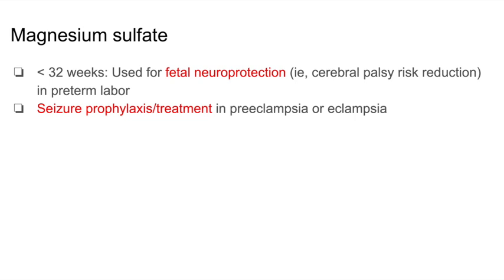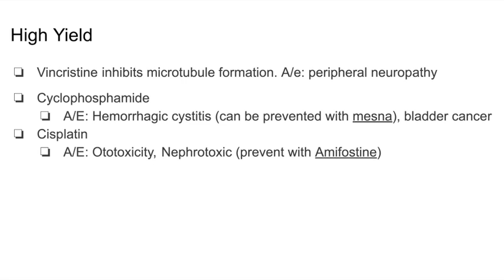Another high-yield topic is pharmacology, and the exams love cancer drugs. Vincristine inhibits microtubule formation, and its adverse effect is peripheral neuropathy. Cyclophosphamide can cause hemorrhagic cystitis; however, you can prevent this with mesna. Another high-yield drug is cisplatin, whose adverse effects include nephrotoxicity and ototoxicity. You can prevent the nephrotoxicity by using amifostine.